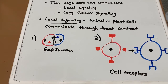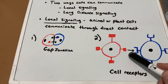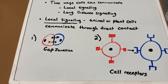When cells need to communicate, there are two ways in which this is possible: local signaling and long-distance signaling. During local signaling, animal or plant cells can communicate through direct contact. Animal or plant cells have cell junctions that directly connect the cytoplasm to the adjacent cytoplasm, as seen here. Cells can also communicate through direct contact between membrane-bound cell surface molecules, allowing cell-cell recognition, which is important for the immune system. The gap junction allows the two cytoplasms to interchange receptors or messages.